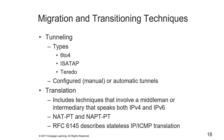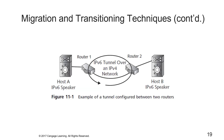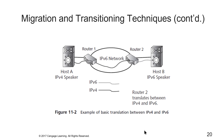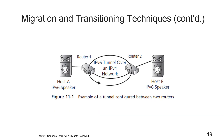There are three categories of migration and transitioning techniques: tunneling, translation, and dual stack. Tunneling involves embedding or encapsulating one protocol inside another for transport. The primary types of v6 tunnels are 6to4, ISATAP, and Teredo. The translation group includes techniques that involve a middleman or intermediary that speaks both v4 and v6 and converts or translates between them. Here is an example of how a basic translation would work, and here's an example of a tunnel configured between two routers and two hosts trying to communicate.